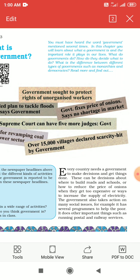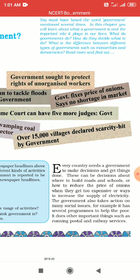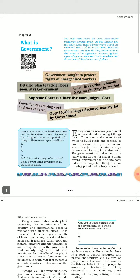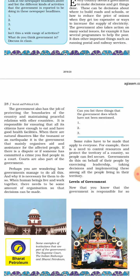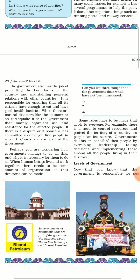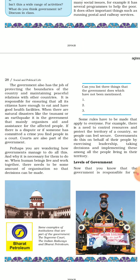So why do we need a government? Every country needs a government to make important decisions and function well. The decisions may be economic, educational or social. This can be decisions about where to build roads and schools, or how to reduce the price of onions when they get too expensive, or ways to increase the supply of electricity.